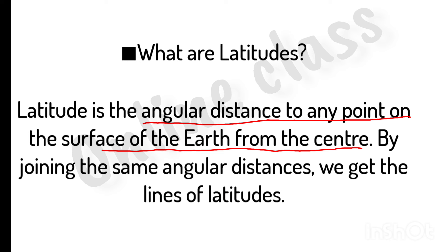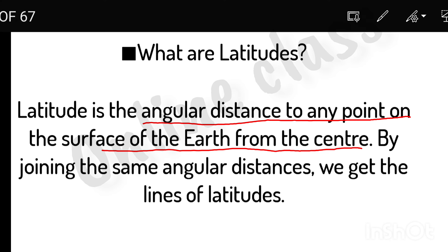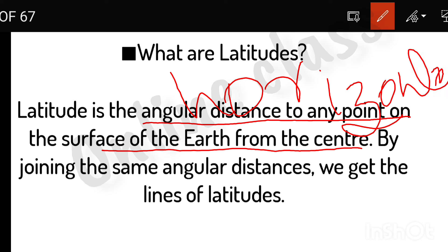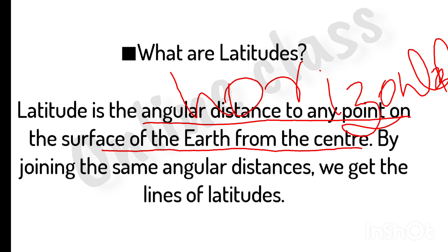What do we call the angular distance to any point on the surface of the earth from the center? How do we call horizontal lines? Horizontal lines are latitudes. The narrow opposite lines — the very vertical lines — that means longitudes.